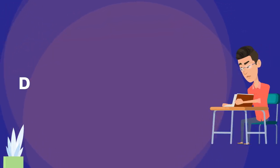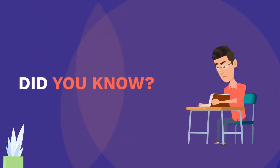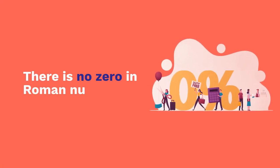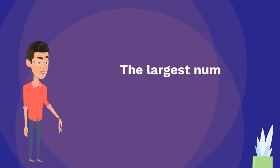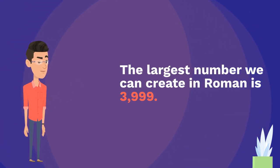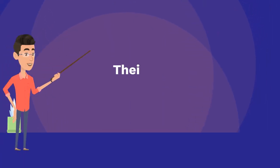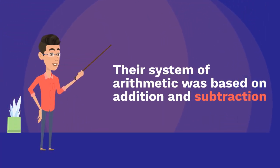Did you know? There is no zero in Roman numerals. The largest number we can create in Roman is 3,999. Their system of arithmetic was based on addition and subtraction.